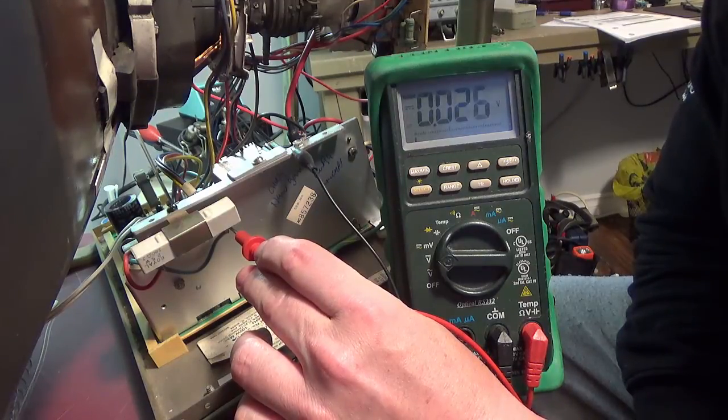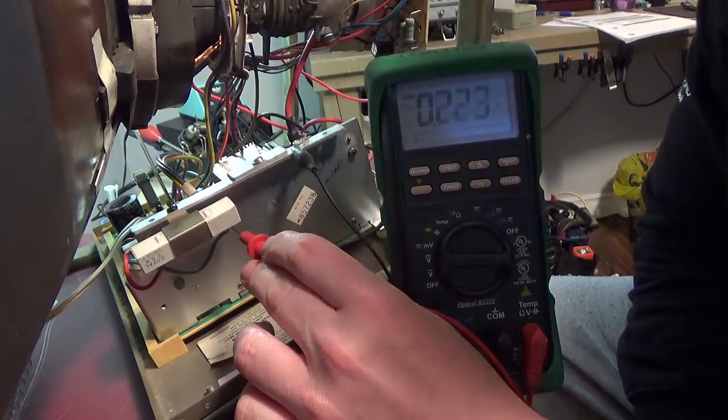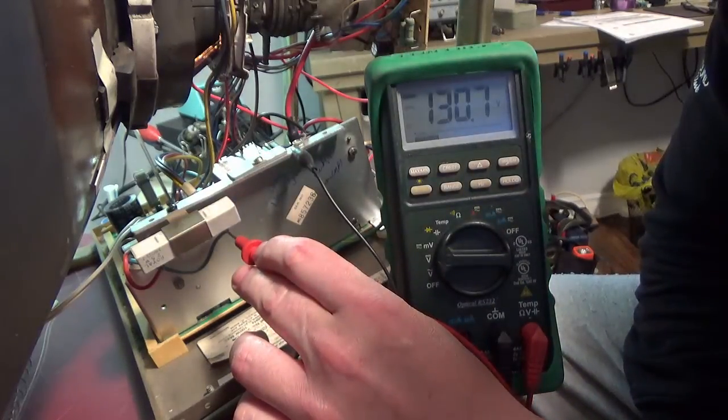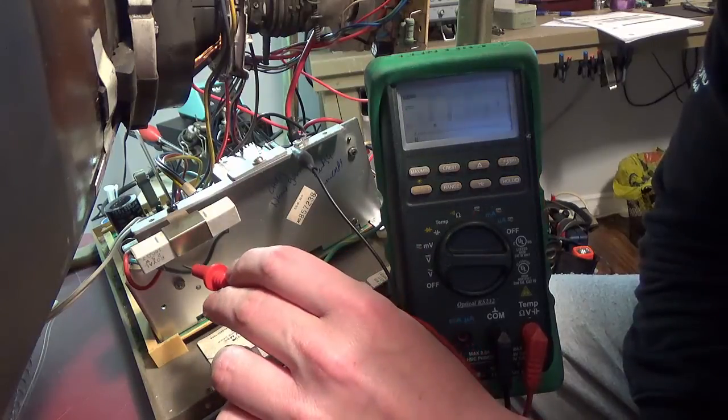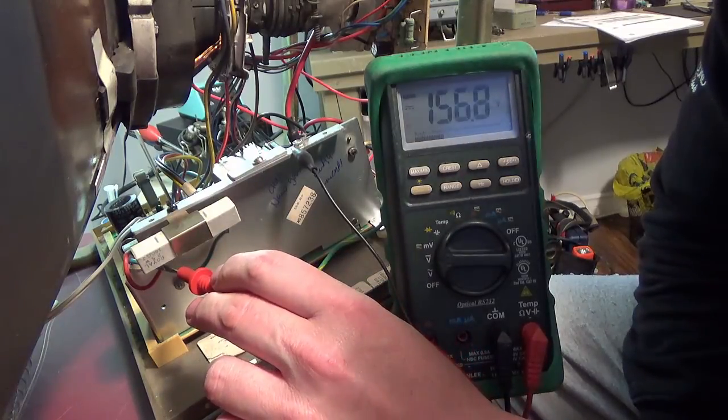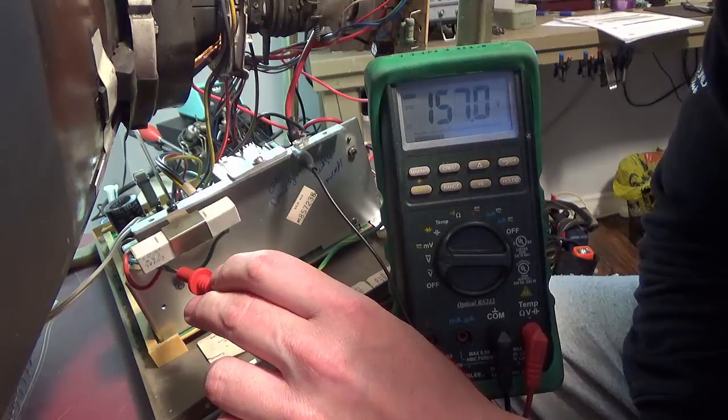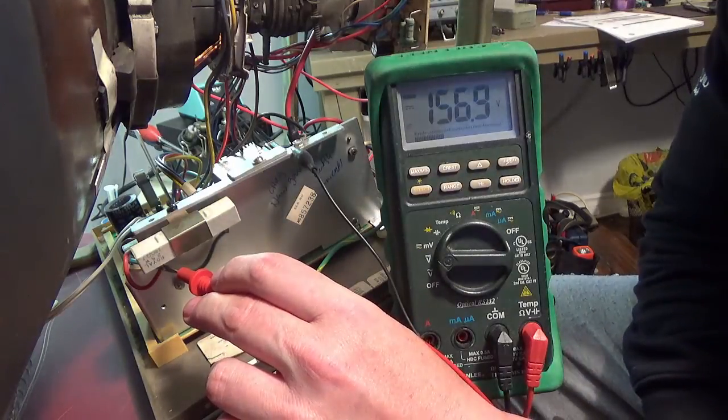The side closest to the neckboard is your regulated side. And you can see we have 130 volts DC, and the other side is the unregulated side, and we have 157 volts. So we're looking pretty good there.